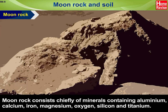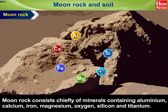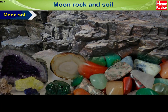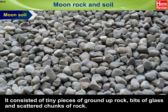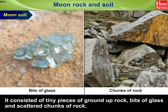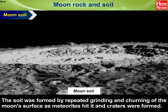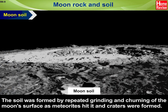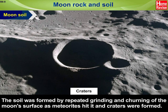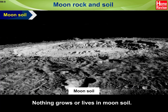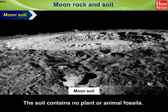Moon rock consists chiefly of minerals containing aluminium, calcium, iron, magnesium, oxygen, silicon, and titanium. Moon soil collected by the first Apollo astronauts was dark grey in colour. It consisted of tiny pieces of ground-up rock, bits of glass, and scattered chunks of rock. The soil was formed by repeated grinding and churning of the moon's surface as meteoroids hit it and craters were formed. Nothing grows or lives in moon soil, and the soil contains no plant or animal fossils.